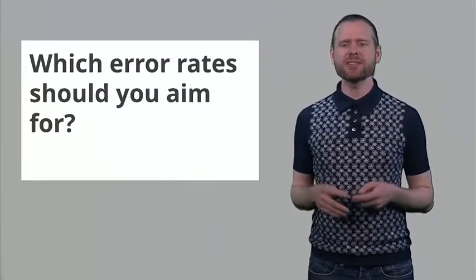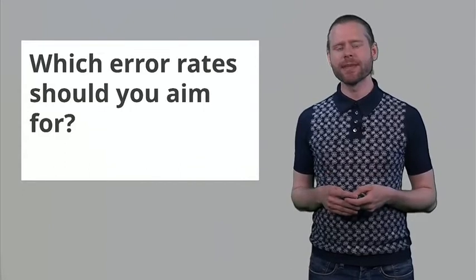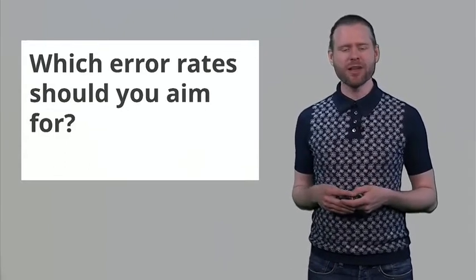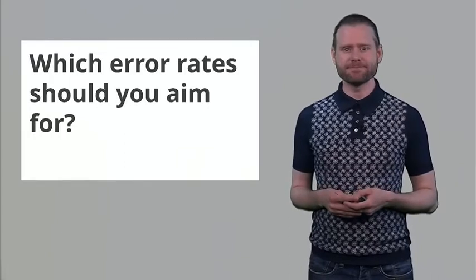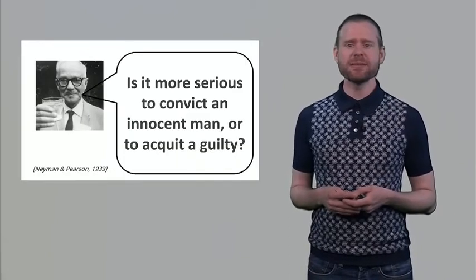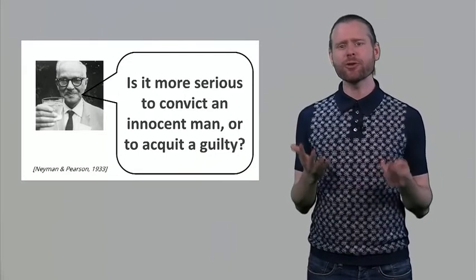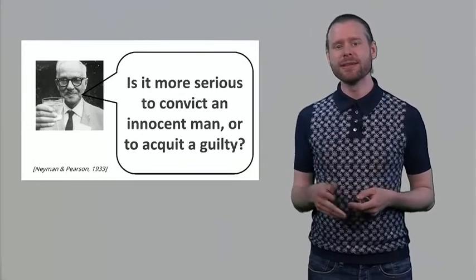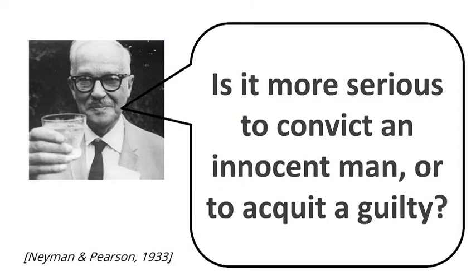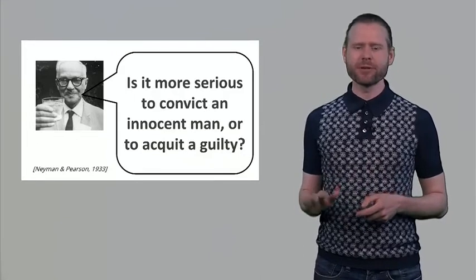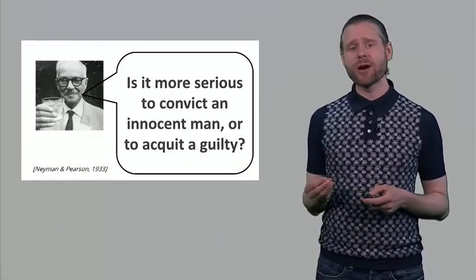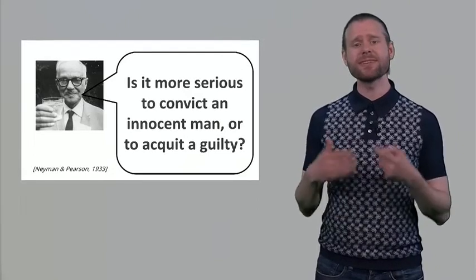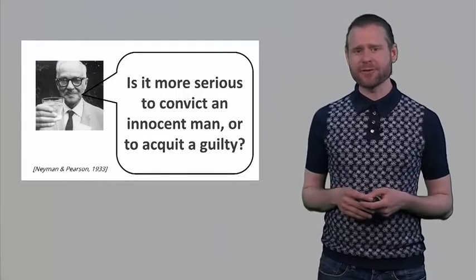Now an important question when you are designing a study is: which error rates should you aim for? I already mentioned that the alpha level and the beta that we often use is an alpha of 0.05 and a beta of 20%, or a statistical power of 80%. However, statisticians themselves say you should not use these benchmarks — you should think for yourself what the best choice is. Neyman himself asks: is it more serious to convict an innocent man or to acquit a guilty one? Convicting an innocent man is a type 1 error; acquitting a guilty man is a type 2 error. Depending on your beliefs, one of these two types of errors might be more serious.